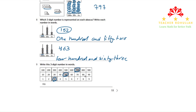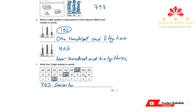So, seven hundred fifty three. We can easily write them in word form: seven hundred and fifty three.